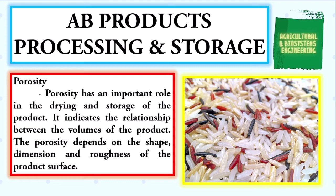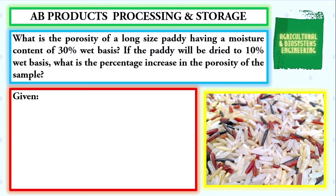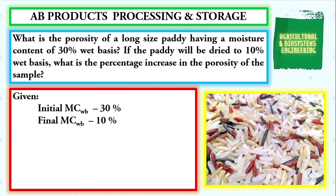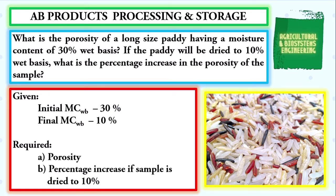Going back to our problem, let us first identify our given. We have the initial moisture content in wet basis of 30% and the final moisture content to be 10%. Note that in solving porosity, we always use the wet basis moisture content for our sample. If the problem states a dry basis moisture content, simply convert it to wet basis moisture content. The required values are the porosity and the percentage increase if the sample is dried to 10%.